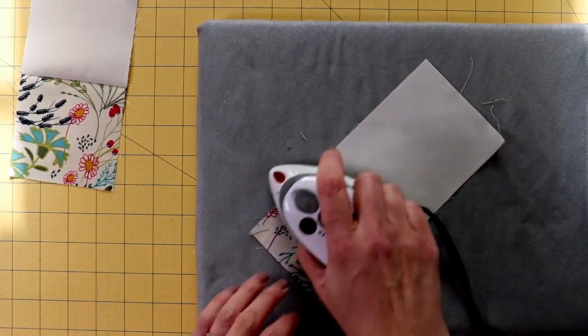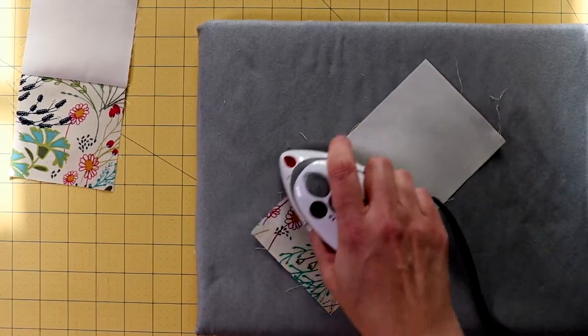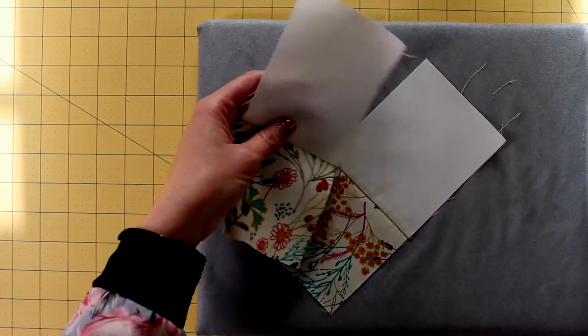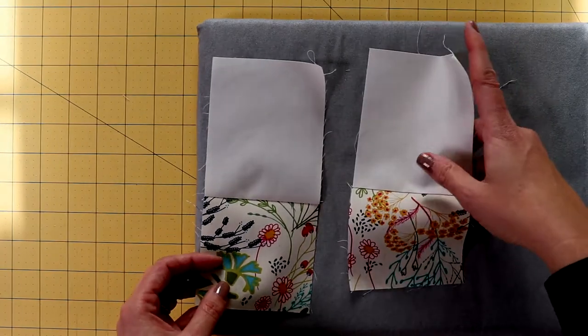Here's that second piece, which I've already kind of pre-pressed. So then you end up with the two longer rectangles.